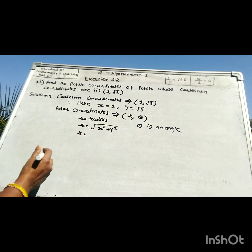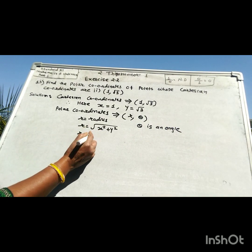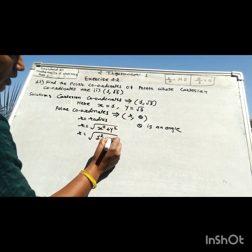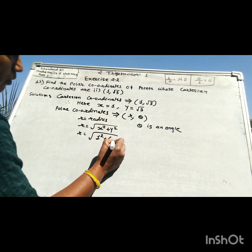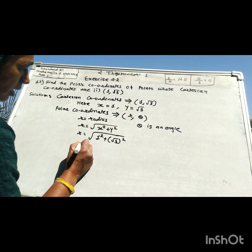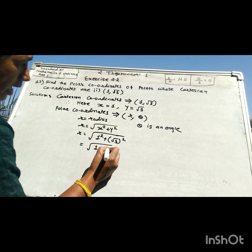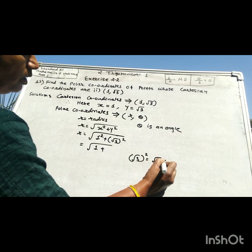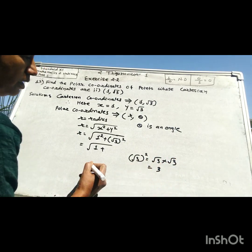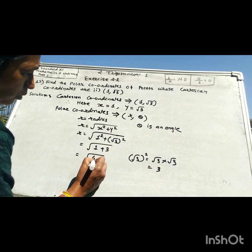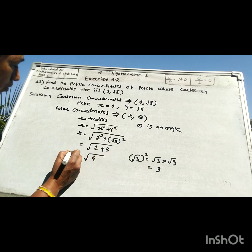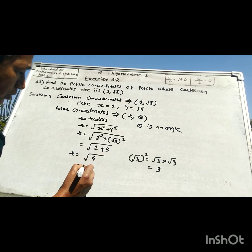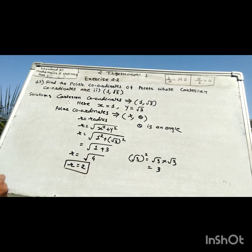First we find r. Put the value of x and y: x is 1, so 1 squared is 1, and y is root 3, so root 3 squared means root 3 into root 3, which is 3. Square root of 1 plus 3 is square root of 4, which is 2. So r is 2.